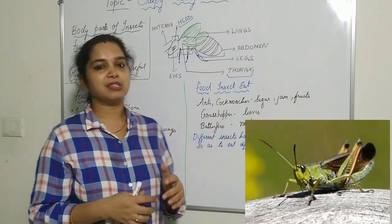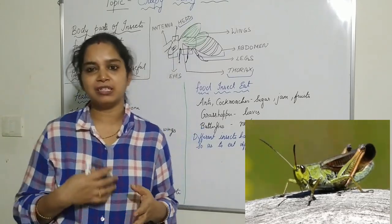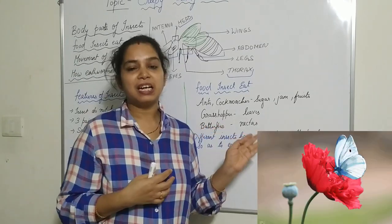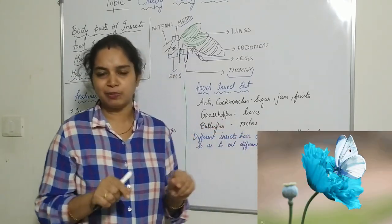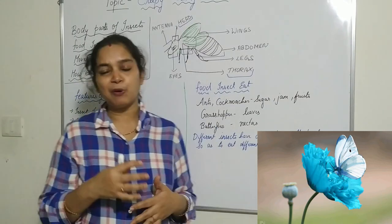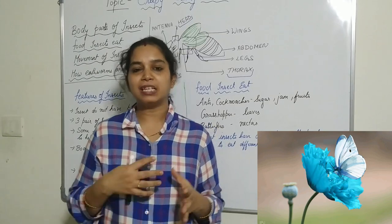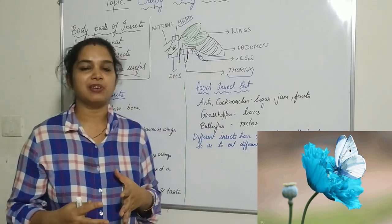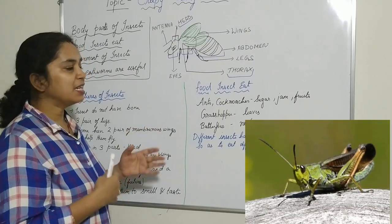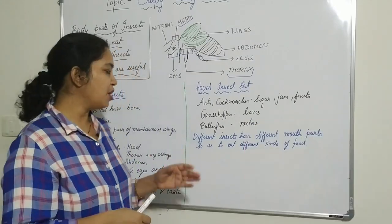Grasshoppers eat leaves, and caterpillars — which are also insects — also eat leaves. Butterflies suck nectar using their very tubular mouth structure to draw nectar from flowers. The mouth parts of different insects are different so that they can feed on different substances. The eating habits of different insects vary greatly.